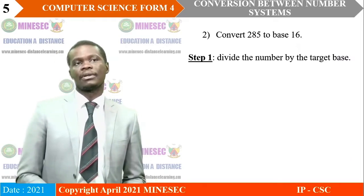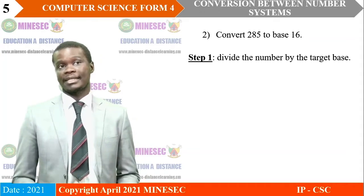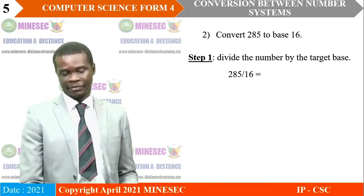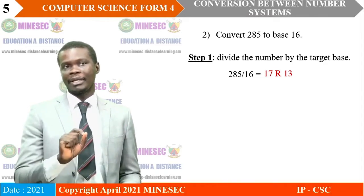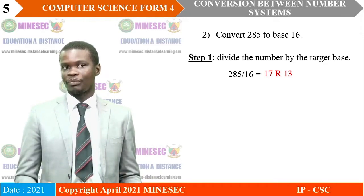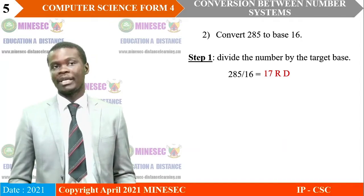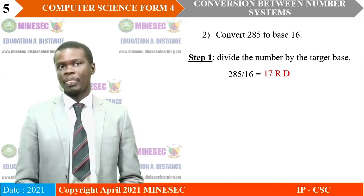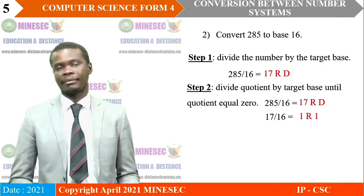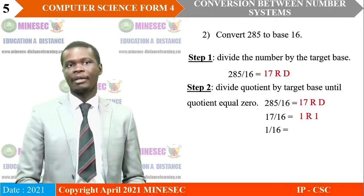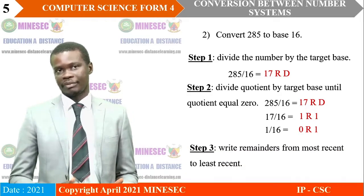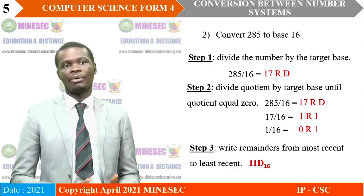In the next assignment, we had to convert 285 to base 16. Same strategy — we divide the number by the target base, which is 16. 285 divided by 16 gives 17 remainder 13. But 13 must be a base 16 symbol, and 13 is not a base 16 symbol, so we use its representation D. So we write 17 remainder D. Is 17 equal to 0? No. So we divide 17 by 16 to get 1 remainder 1. Is 1 equal to 0? No. So we divide 1 by 16 to get 0 remainder 1. We write from the most recent to the least recent to get the answer 1 1 D base 16.